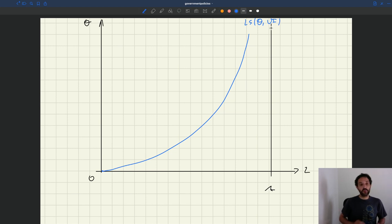We have the labor demand. Here we're in the case with a linear production function, so that gives us a horizontal labor demand, maybe something like this.